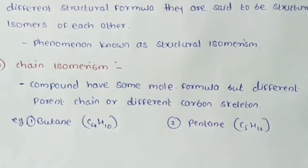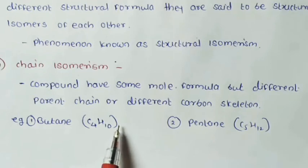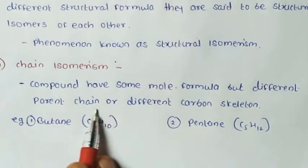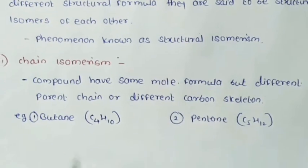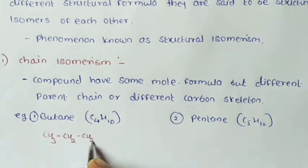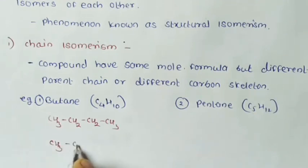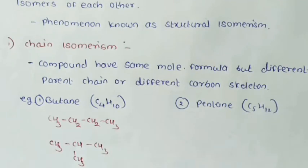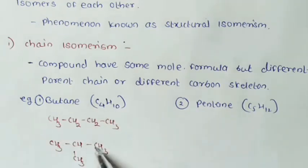For example, butane has the molecular formula C4H10. This molecular formula presents two different carbon skeletons: first, CH3-CH2-CH2-CH3 (n-butane), and second, CH3-CH(CH3)-CH3 (isobutane). These two are chain isomers of each other — same molecular formula but different parent chain.